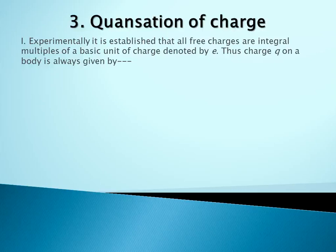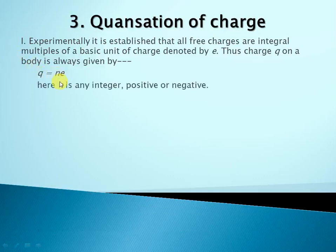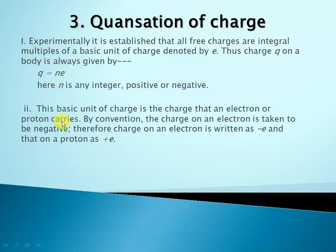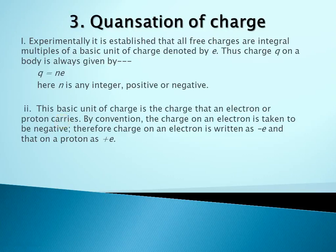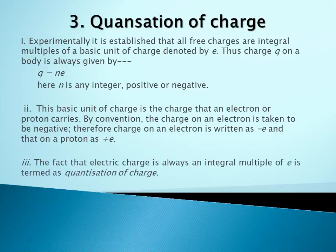The third property is quantization of charge. Experimentally it is established that all free charges are integer multiples of a basic unit. We can write the equation as q = ne, where q is the symbol of charge, n is any positive or negative integer, and e is the electron charge. The charge will be negative or positive by convention. The fact that electric charge is always an integral multiple of e is termed quantization. Quantization means the quantity is obtained by the integer n.